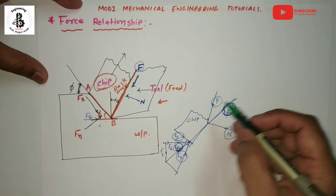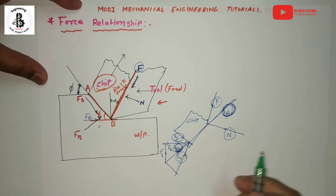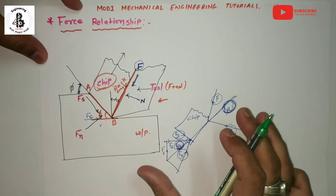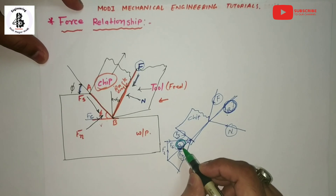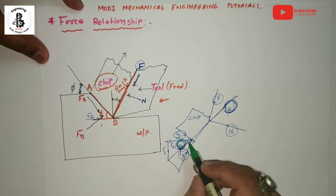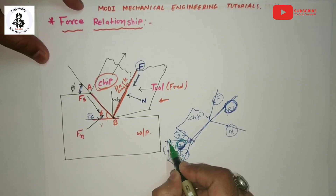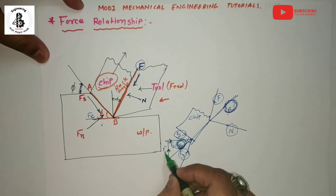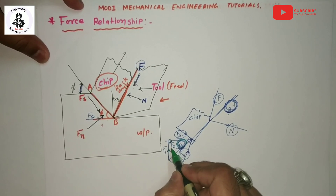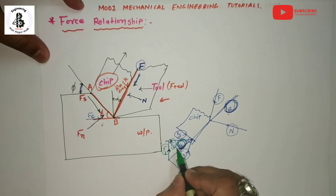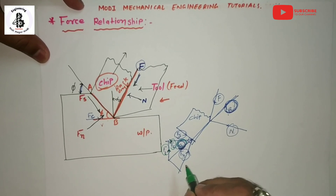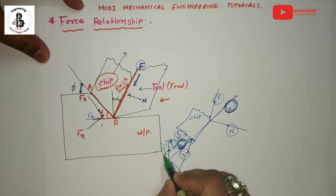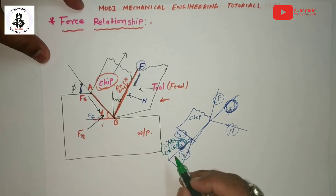With the help of a dynamometer, the two orthogonal components of the resultant R can be measured. The horizontal component is the cutting force Fc and the vertical component is the thrust force Ft. These cutting force Fc and thrust force Ft are measured with the dynamometer fixed to the single-point cutting tool.